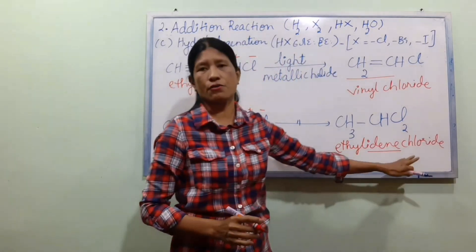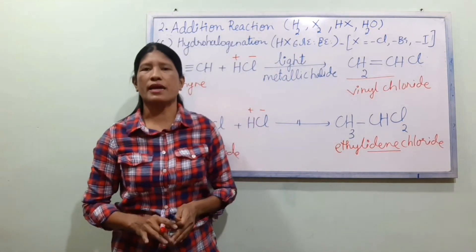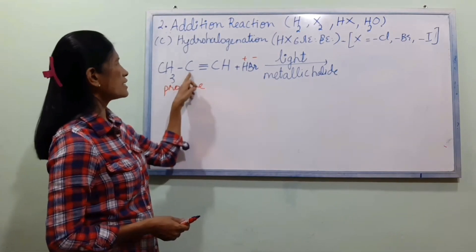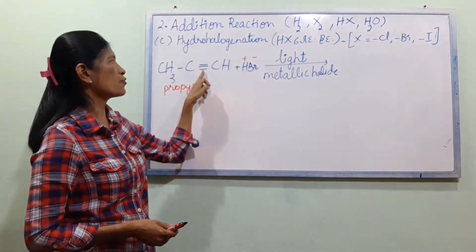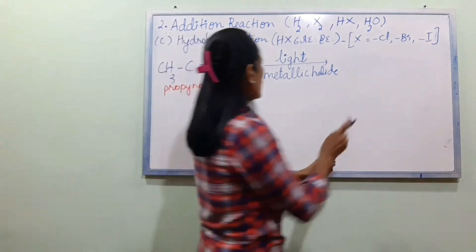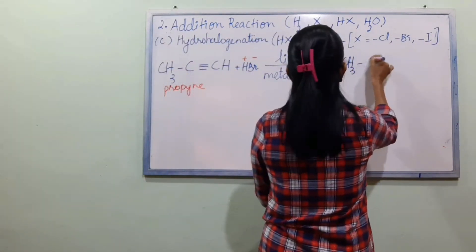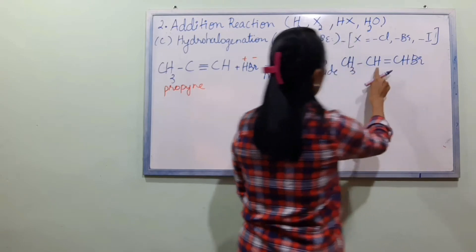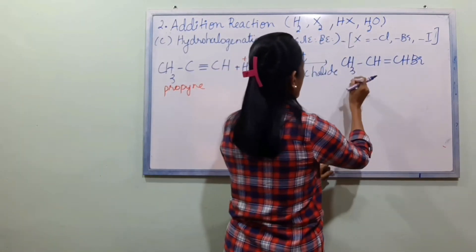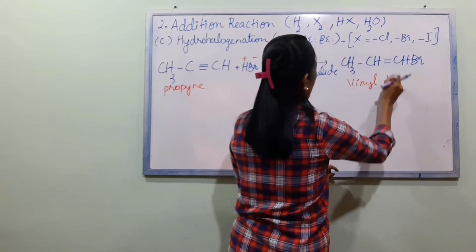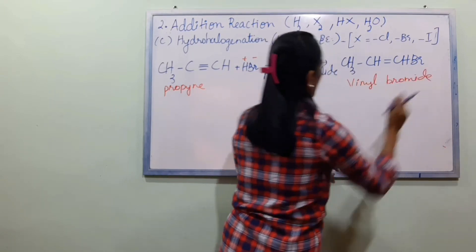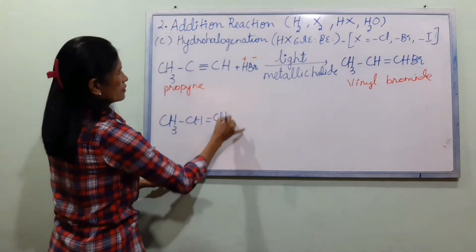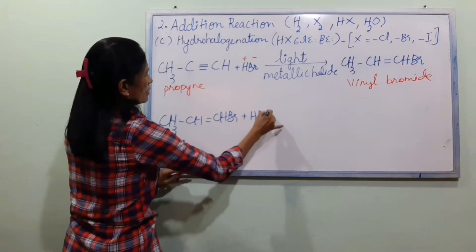If we use D, we will use HBr. CA3C reacts with H and CH. We will use CH-BR. CH3C has an H double bond to CH-BR. So if we use H, we can use BR. Then we will use VINYL — V-I-N-Y-L. CH3 double bond CH-BR plus H-BR.